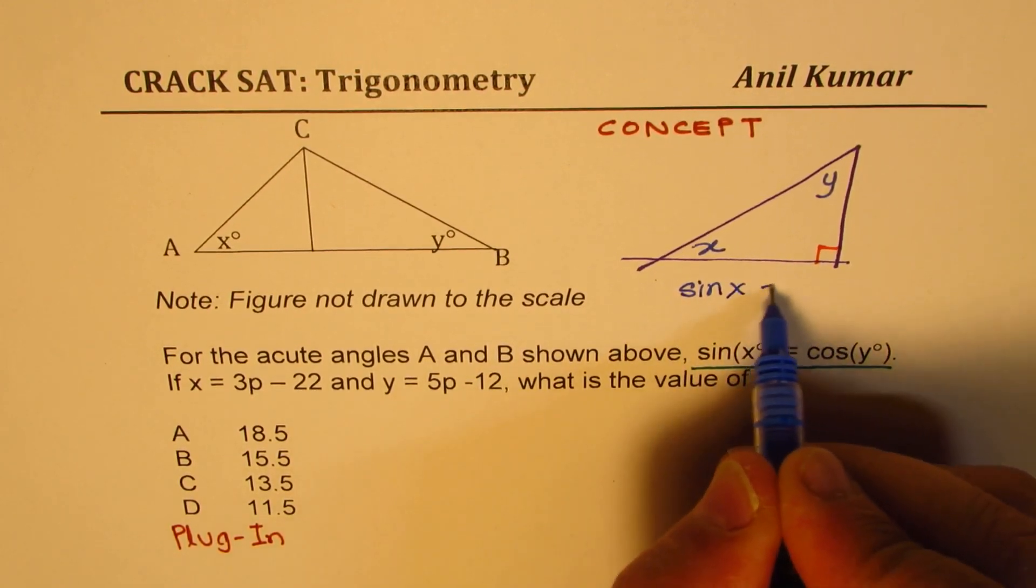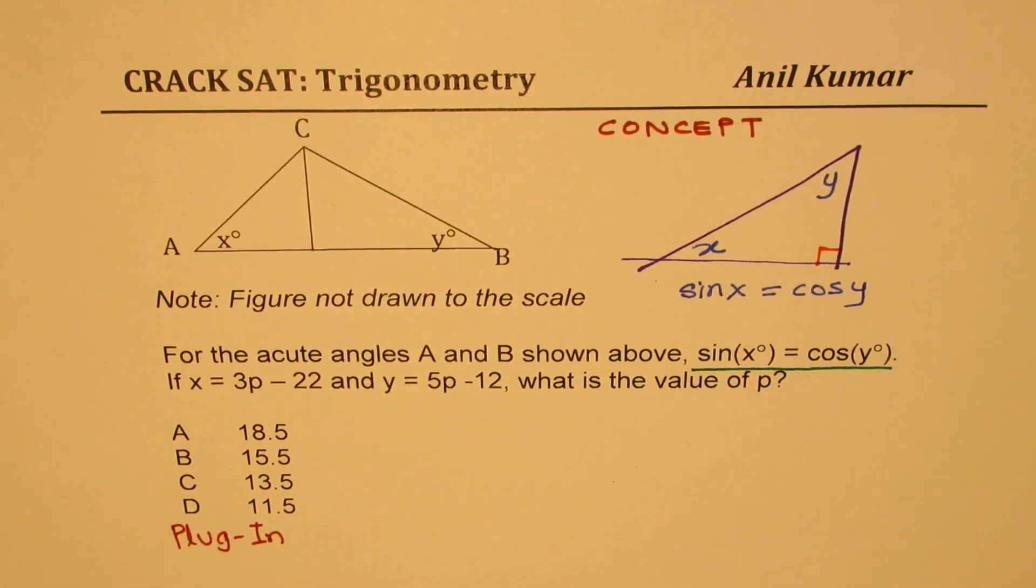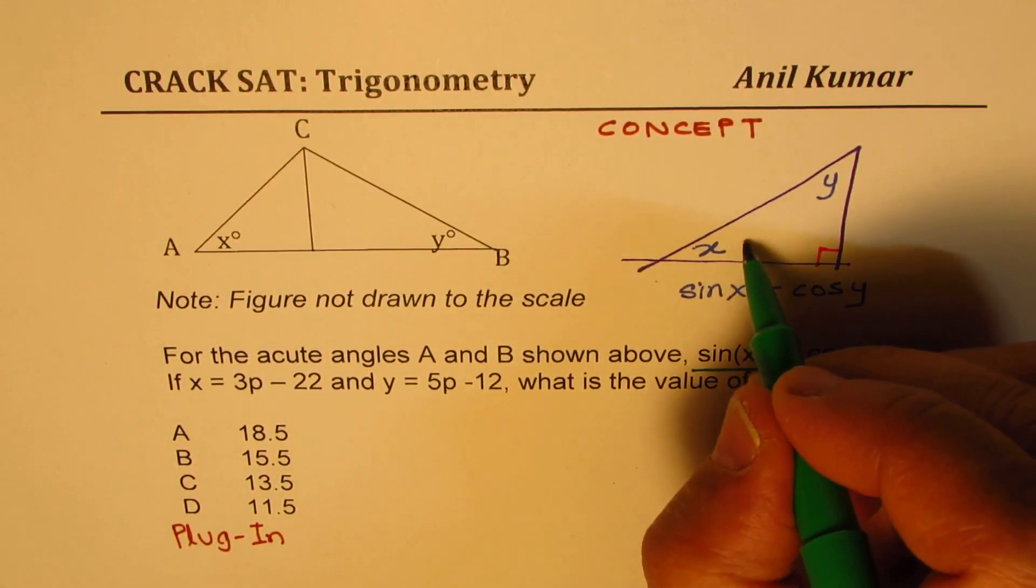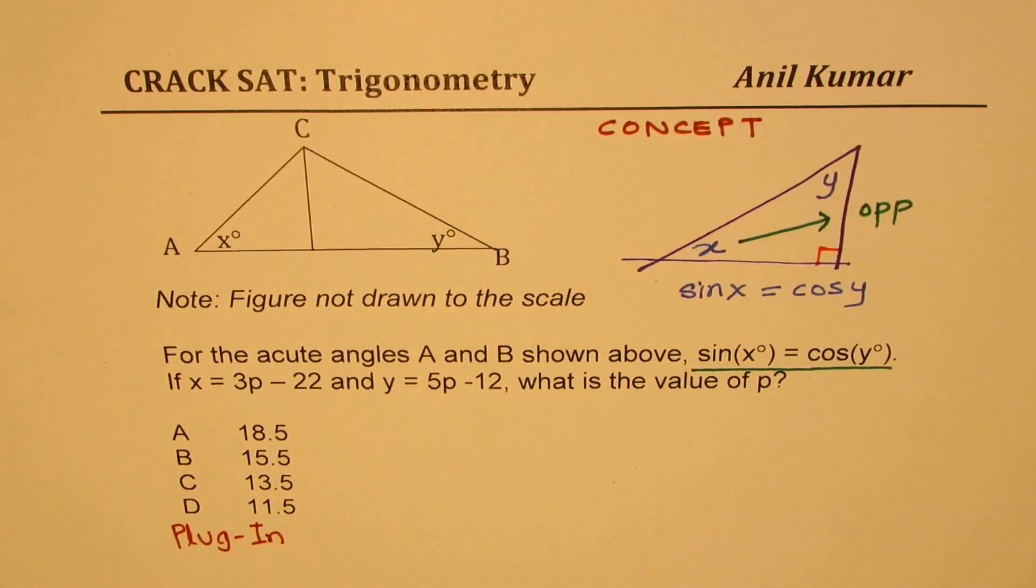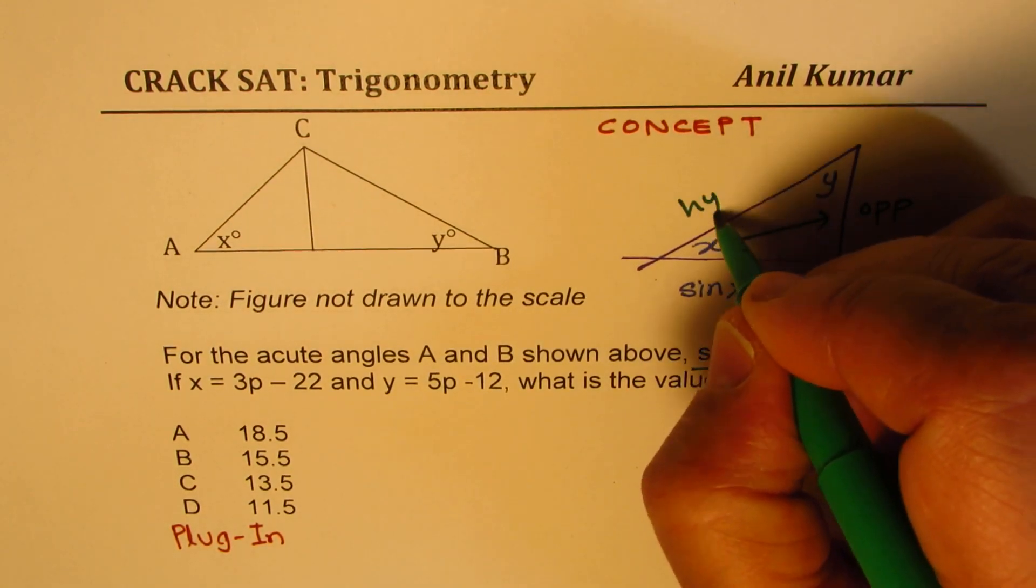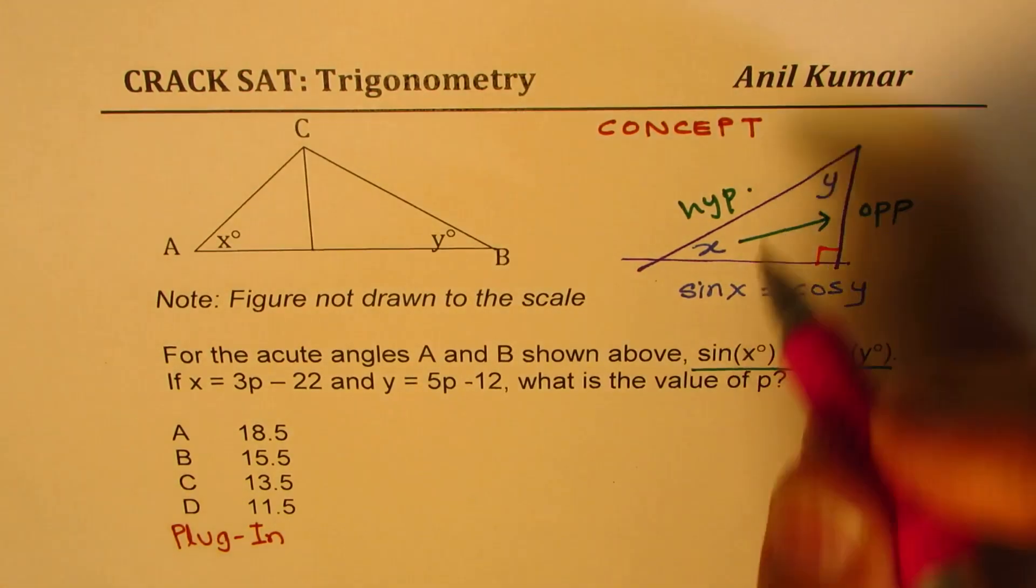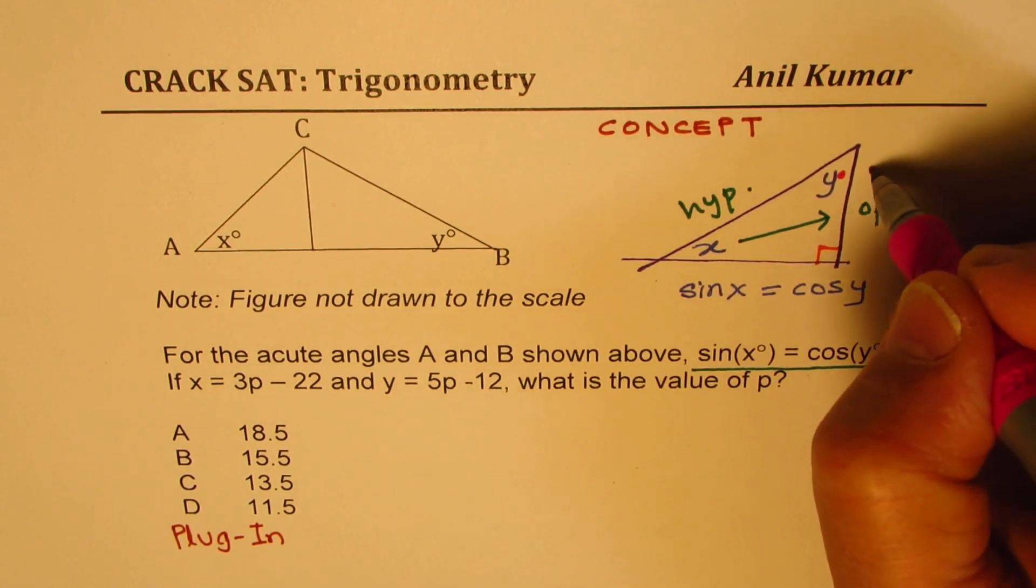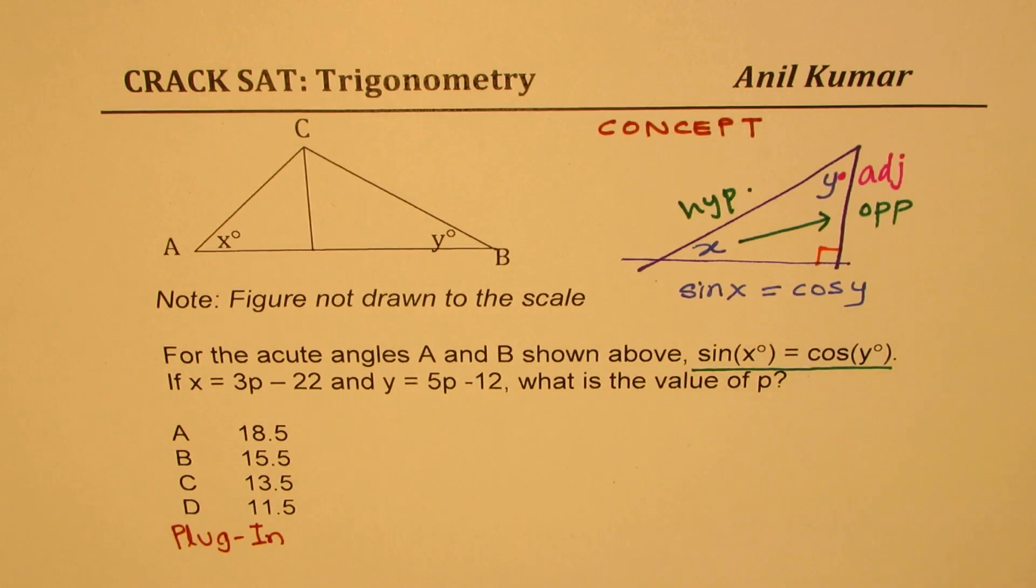So in a right triangle you'll always notice that sine of x is equal to cosine of y. The reason is very simple. If you look from the x point of view, this side is opposite, correct? From x point of view, hypotenuse is the longest side, always.